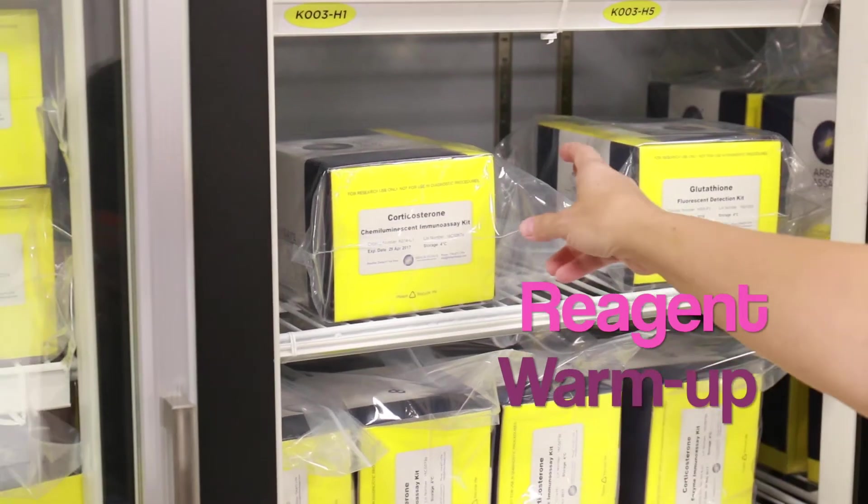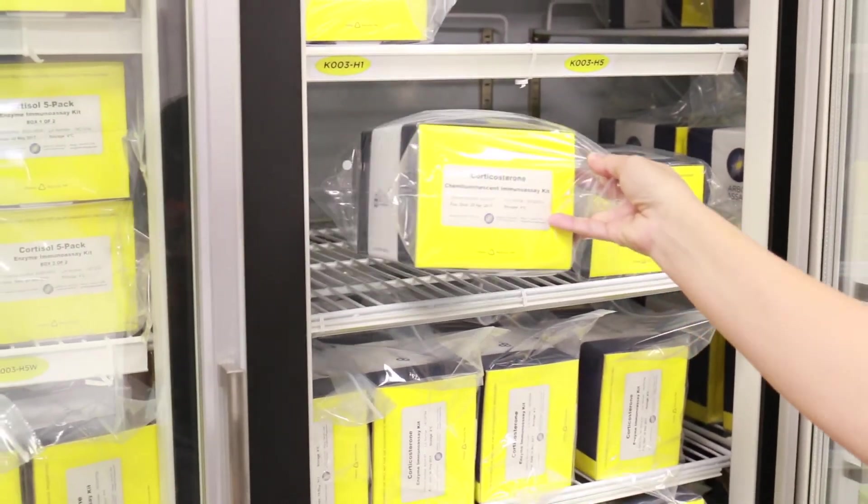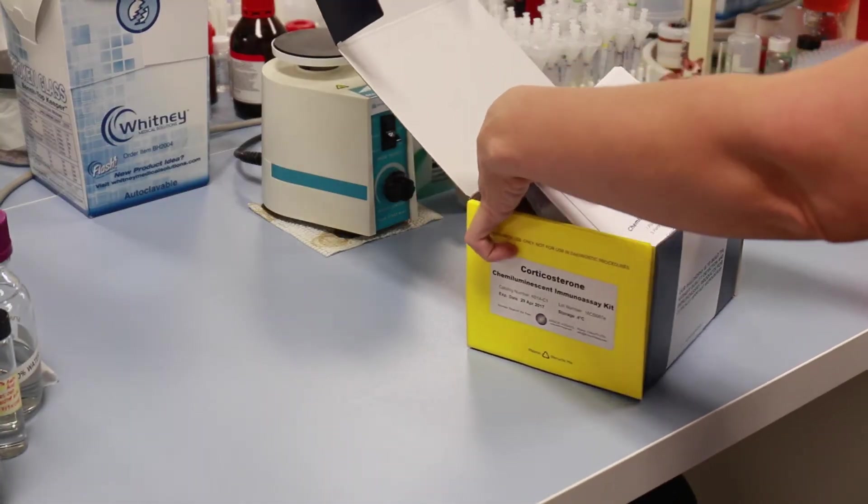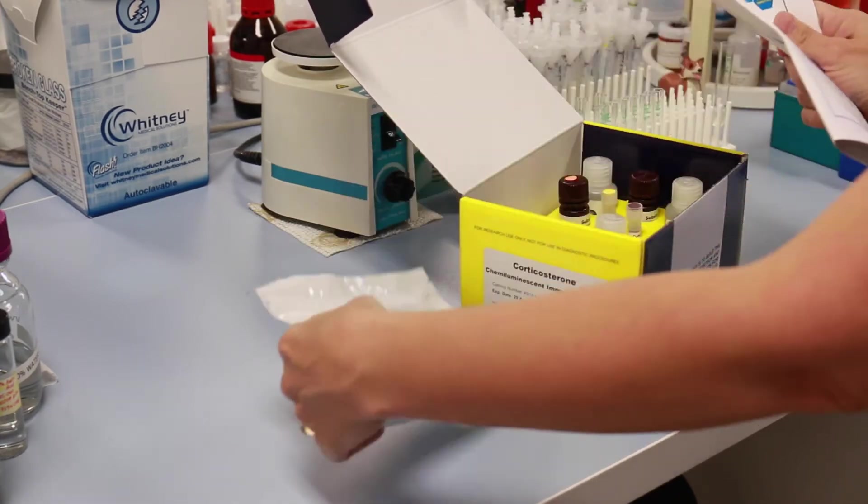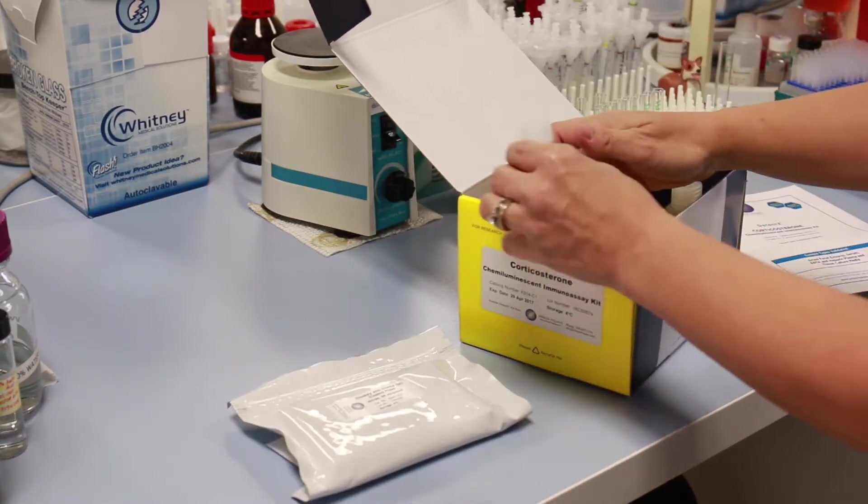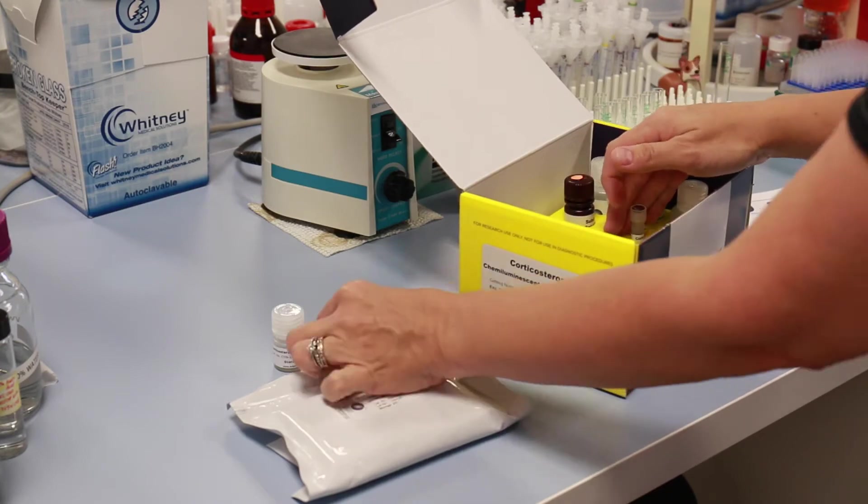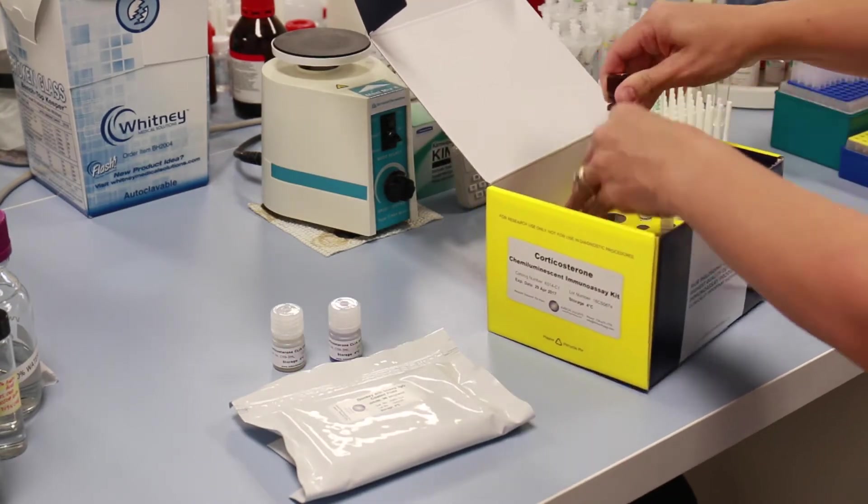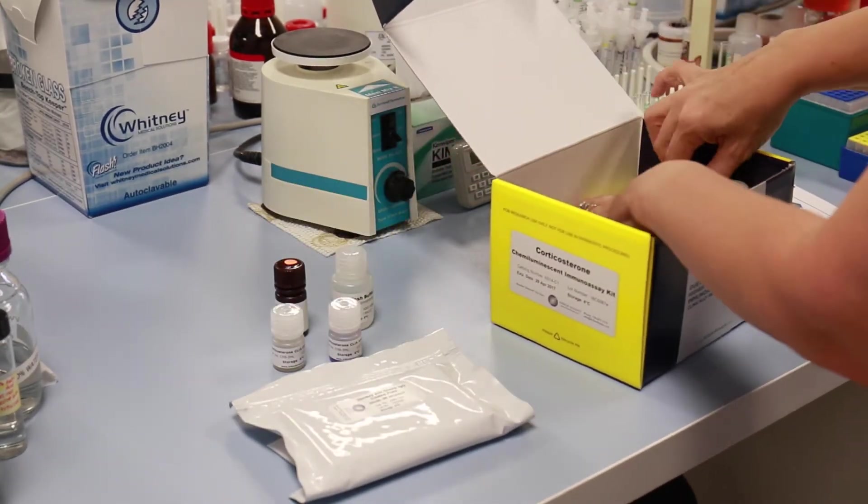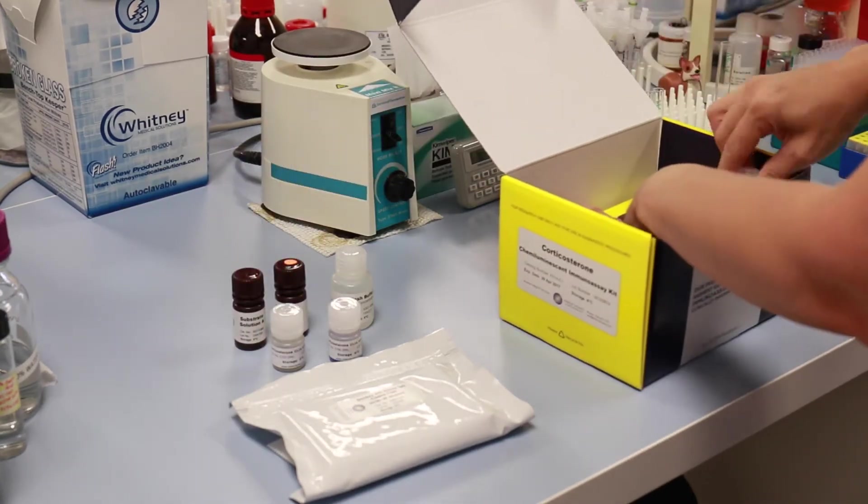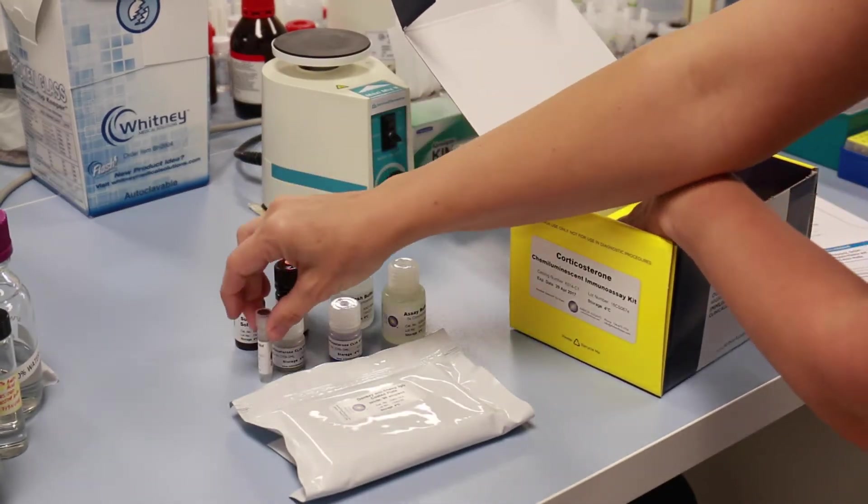Reagent warm-up: Take the kit box out of the fridge or freezer. Unpack the kit box to let the reagents warm to room temperature. Note any precautions with thermally labile solutions, such as with our PKA activity kit KO27-H1.